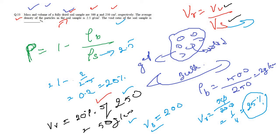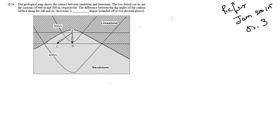Now question number 54, JAM 2019. For this, firstly we should refer to question number 3, JAM 2015, where contour lines and strike lines are discussed. Here we are given contours of 500 and 400, and the map shows the contact between two lithologies — sandstone and limestone.